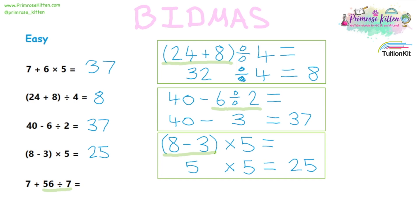For our last one, we have addition and division. Using the BIDMAS, we can see that we have to do the division first. So the first thing we do is 56 divided by seven. That is going to give us eight. So we have seven plus eight, which is going to give us 15.